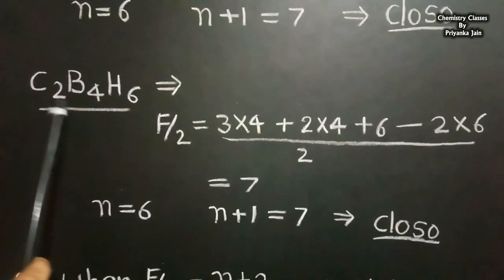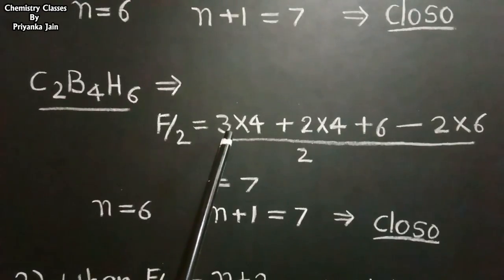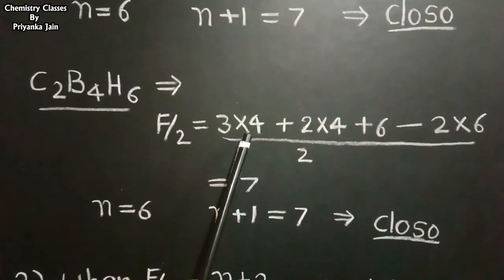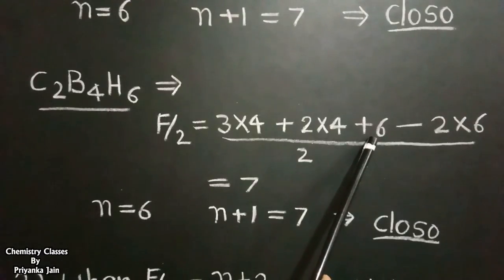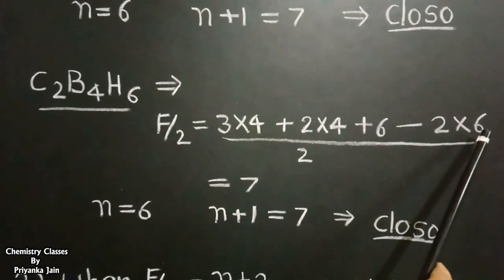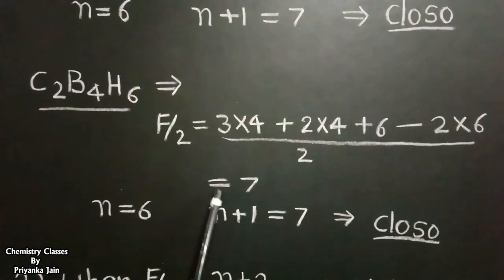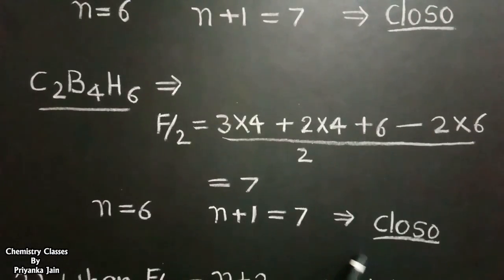Similarly, for C₂B₄H₆: F/2 = (4×2 + 3×4 + 6×1 − 2×6) / 2 = (8 + 12 + 6 − 12) / 2 = 14/2 = 7. Here the number of vertices N is 6 (2 carbons + 4 borons), and 7 equals N+1, so this compound also has a closo structure.